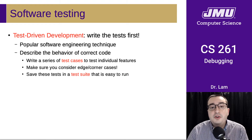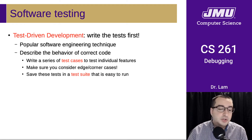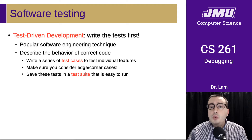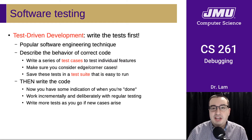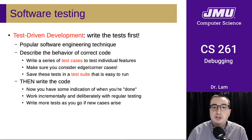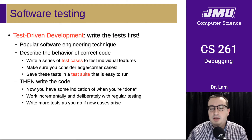The idea is that first you describe the behavior of correct code. Before you write any code, you think about what correct code would do. You take those requirements and encode them in a series of test cases to test all the individual pieces, making sure you consider all the corner and edge cases as best you can. You write these tests and put them together into a test suite that is easy to run and reproducible. Once you have the test suite, then you begin writing your code, and you have an indication of when you're done.